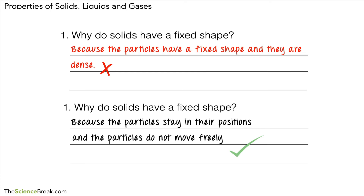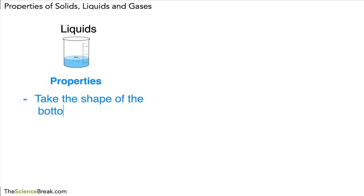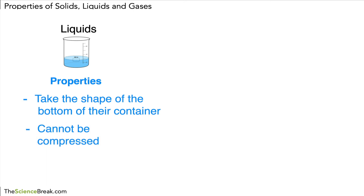We can do a similar thing with liquids. Looking at the properties of liquids, there are a couple of key ones. Firstly, liquids take the shape of the bottom of their container. They also cannot be compressed, just like solids. But what is different is that liquids can flow. So those are the properties for liquids. Let's take a look at the arrangement of the particles.